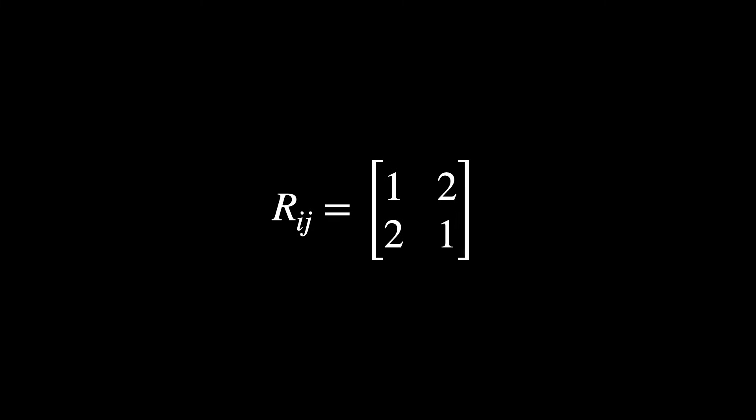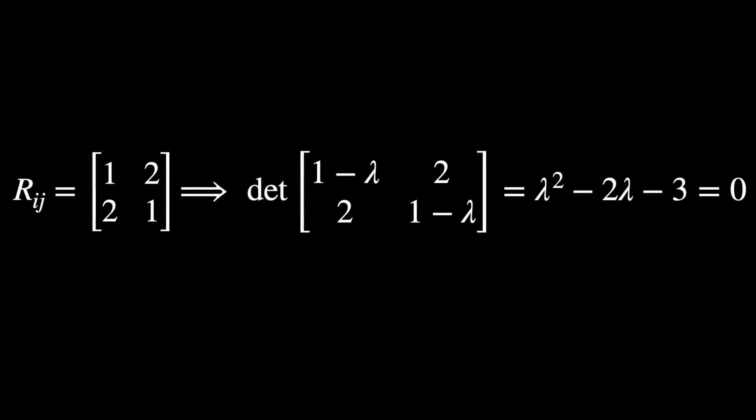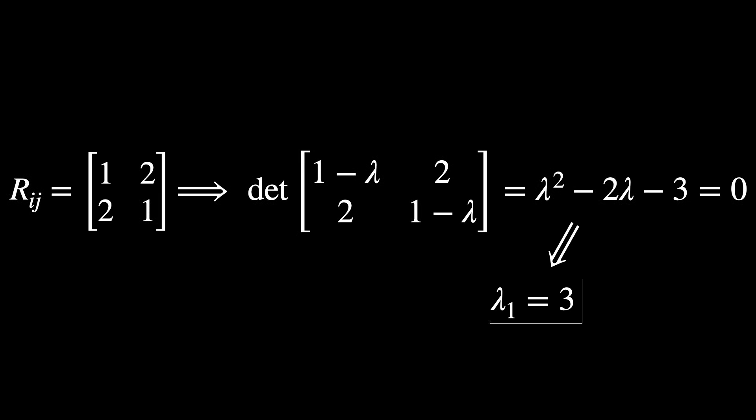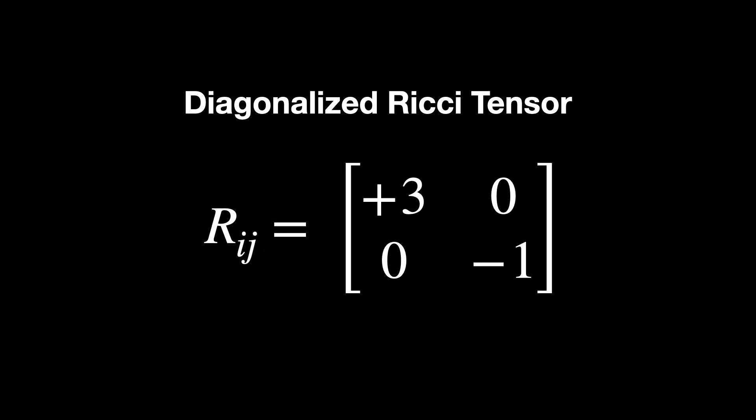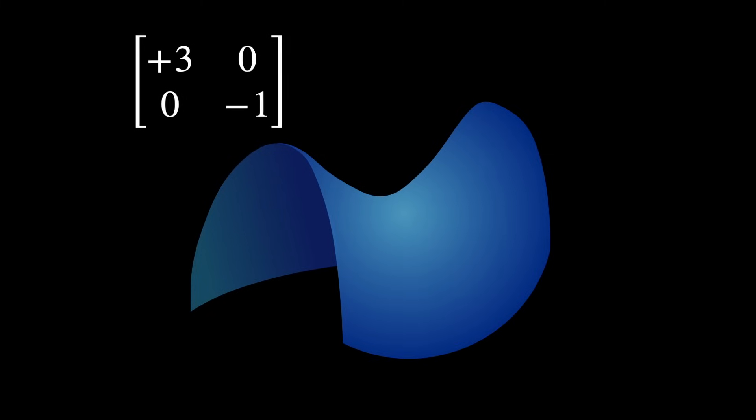Anyway, going back to our example, we can calculate the eigenvalues of this Ricci matrix transformation. If you want to learn how to calculate the eigenvalues and eigenvectors of a matrix, as well as a very visual and intuitive interpretation of these concepts, check out this video in the channel. Therefore, the diagonalized Ricci tensor is this, which reveals itself as a saddle point.